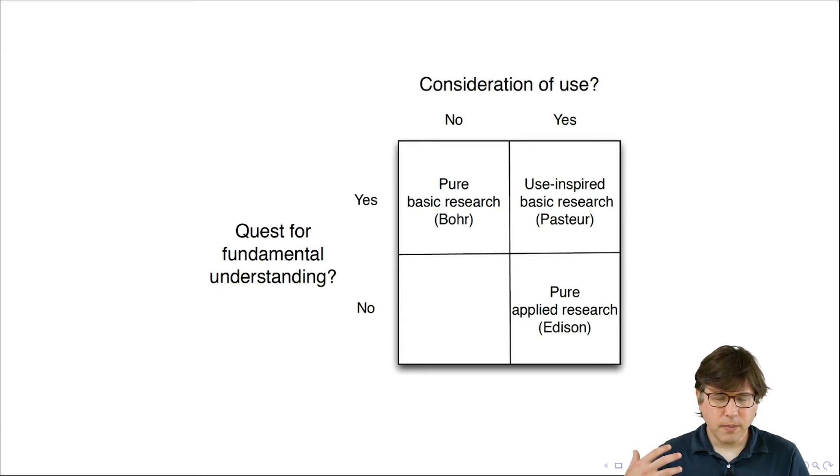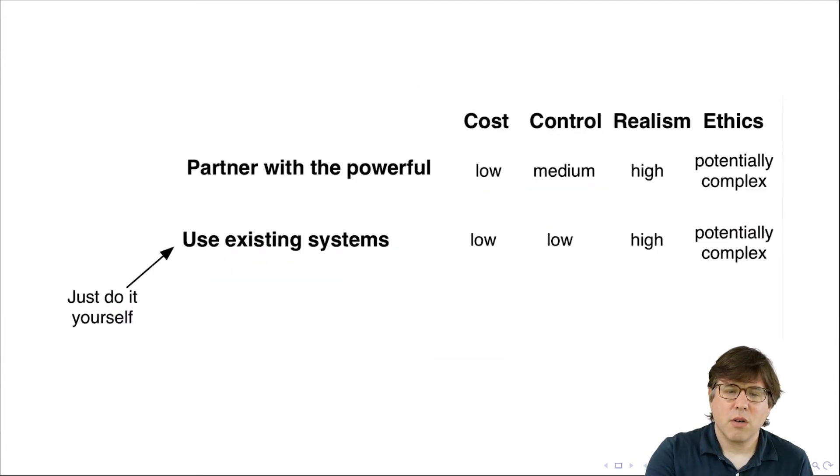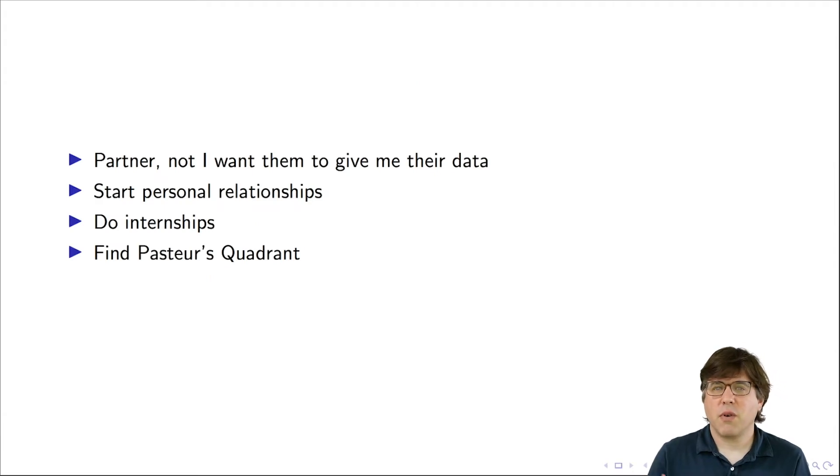And so if you want to partner with the powerful, it really helps if you can be in Pasteur's quadrant, because here your partner probably has a consideration of use and you probably want to quest for fundamental understanding. And Pasteur's quadrant is a way to make it a true partnership where both parties can benefit. So those are four ideas for how you can build successful partnerships to run experiments.